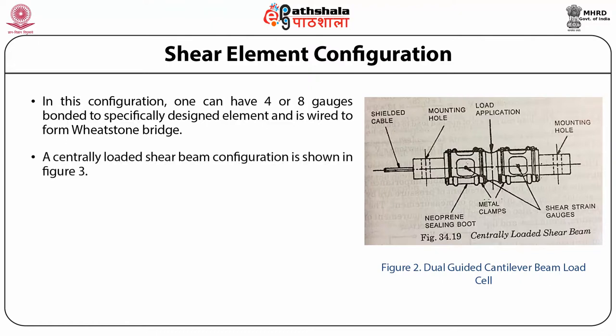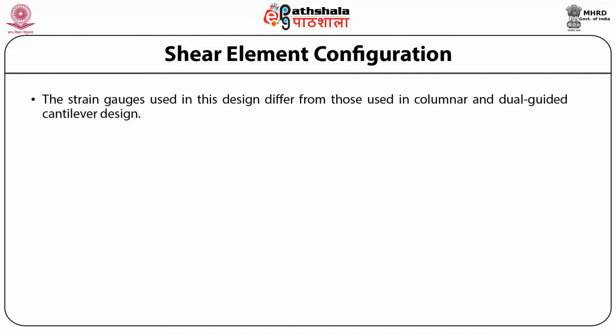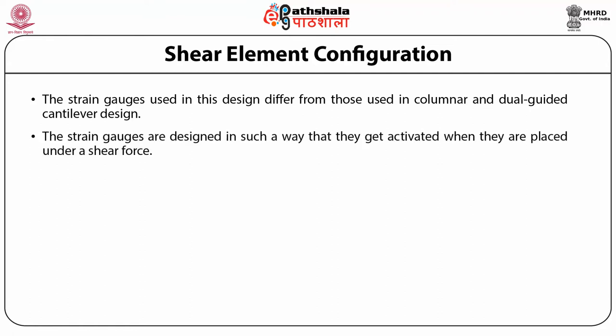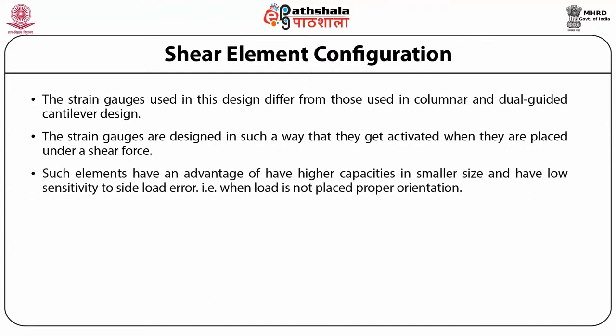A centrally loaded shear beam configuration is shown in Figure 3. The strain gauges used in this design differ from those used in columnar and dual guided cantilever designs. The strain gauges are designed so that they get activated when placed under a shear force. Such elements have an advantage of having higher capacities in smaller size and have low sensitivity to side load error, that is when load is not placed in proper orientation.